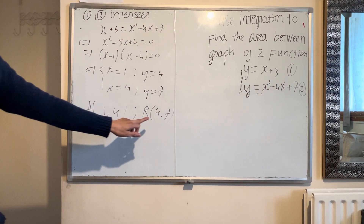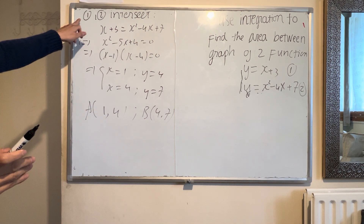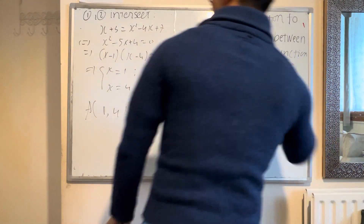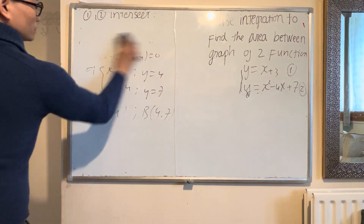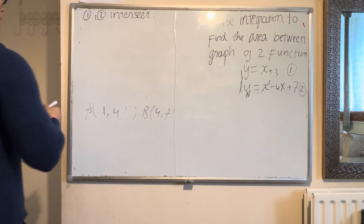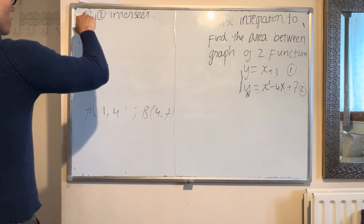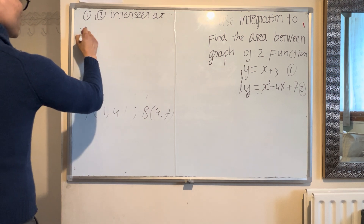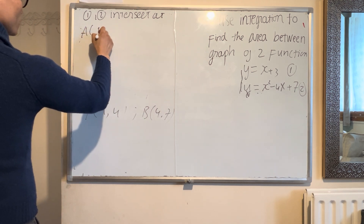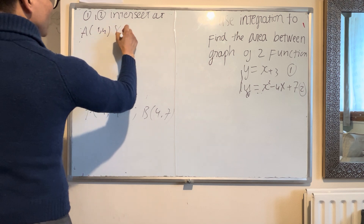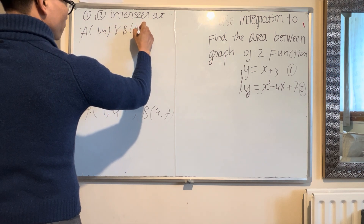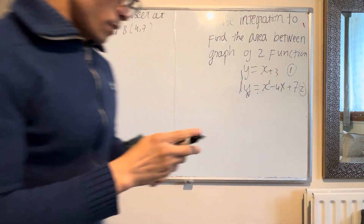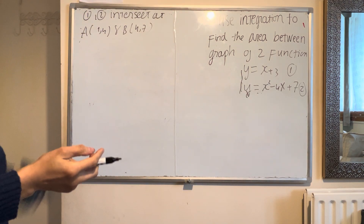Points A and B are where the two graphs intersect. So graph one and graph two intersect at point A with coordinates (1, 4) and point B with coordinates (4, 7). Now we move to the next step.